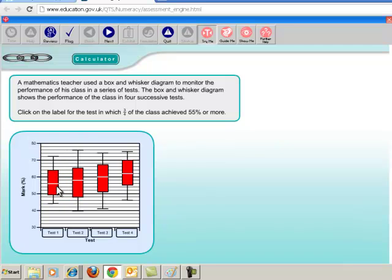So we just have to scan along the tests until we find where the bottom of the box hits 55%, and that is on test four.